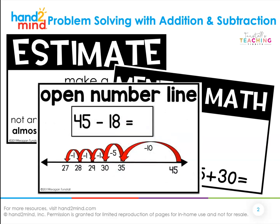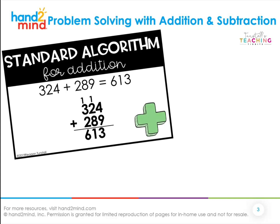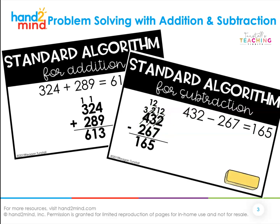Another strategy we use a lot with addition and subtraction are open number lines, where we start with a value and then either jump forward or backwards to find the sum or the difference by counting the hops. When we are solving addition and subtraction problems, another strategy we love to use is standard algorithm. With standard algorithm for both addition and subtraction, you might have to regroup, using your knowledge of ones, tens, and hundreds to solve.